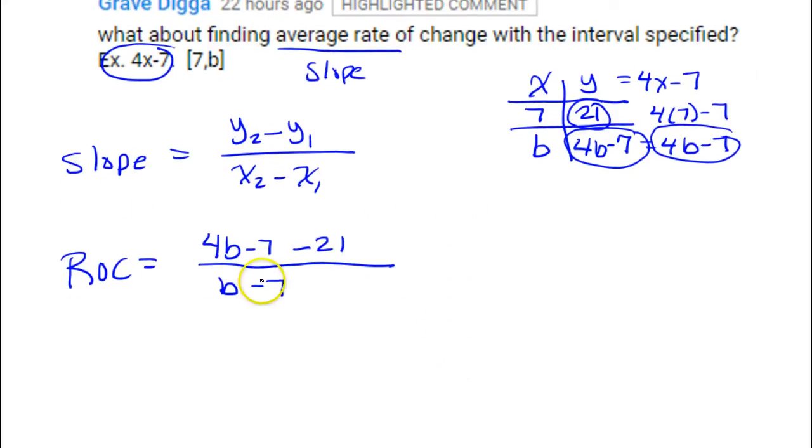So it's just a matter of simplifying this as best we can. So this will be 4b minus 28, just combining these like terms, over b minus 7.